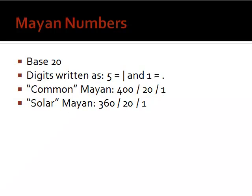Chapter 11 was about Mayan numbers. Mayan numbers are written in base 20, except that the digits are written as lines and dots, where a line counts for 5 and a dot counts for 1. And also, there's two different kinds of Mayan numbers. The common Mayan numbers have the place values being 420 and 1. And then the solar Mayan numbers have 360, 20, and 1.